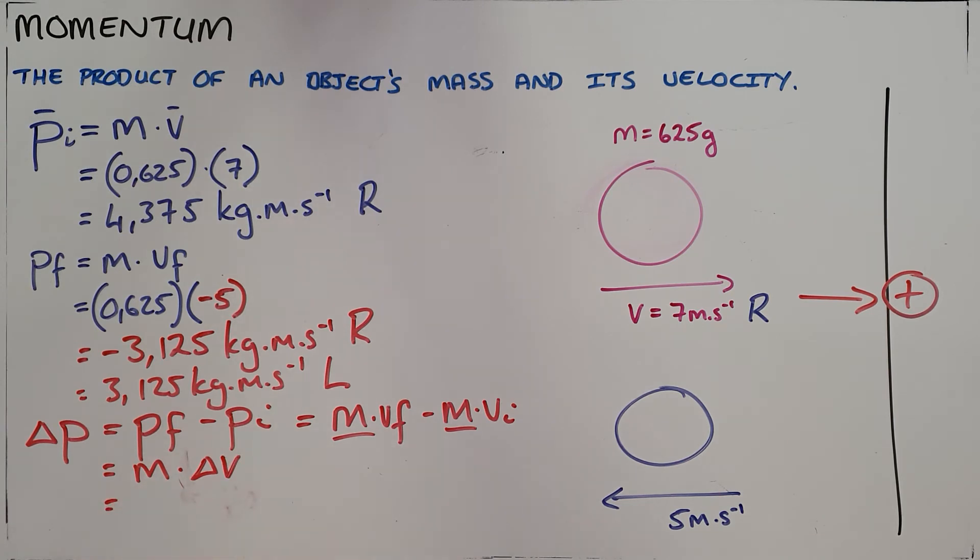Either way, we can substitute in the values that we have. Again, keeping in mind that the direction is important. So we can say that our final momentum is negative 3.125 minus the initial momentum of 4.375. And we can see that our change in momentum is then negative 7.5 kilogram meters per second.